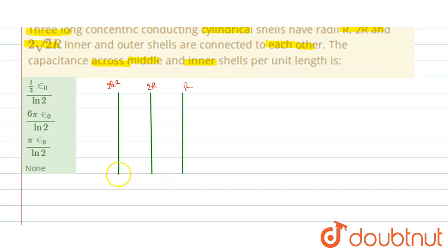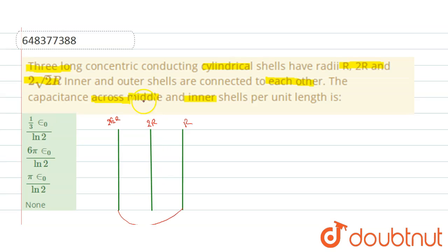Now, the outer shell is connected to the inner shell. It has asked us to calculate the capacitance across the middle and the inner shells. So this is the inner shell and let us consider this capacitance is C1 and this is the middle. So this capacitance let us consider C2.